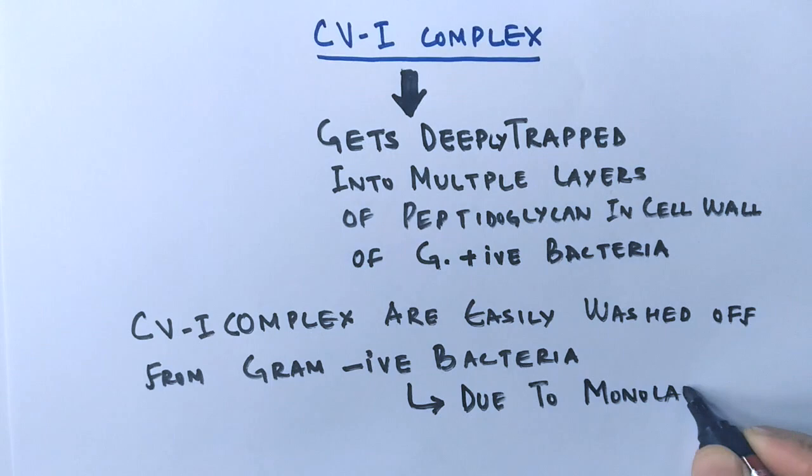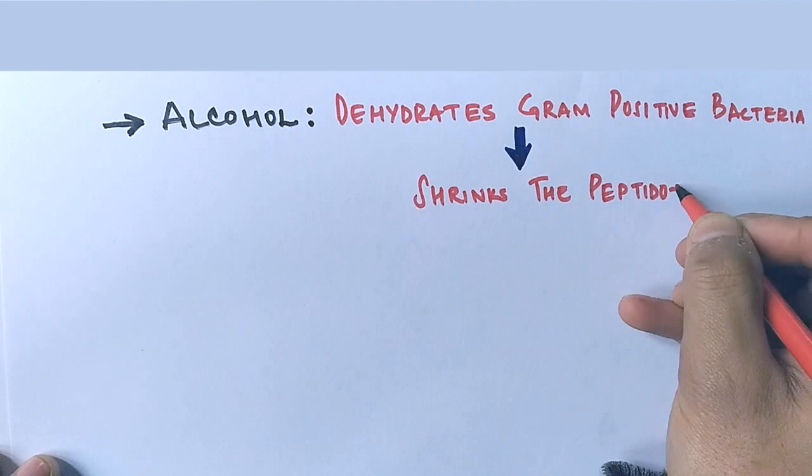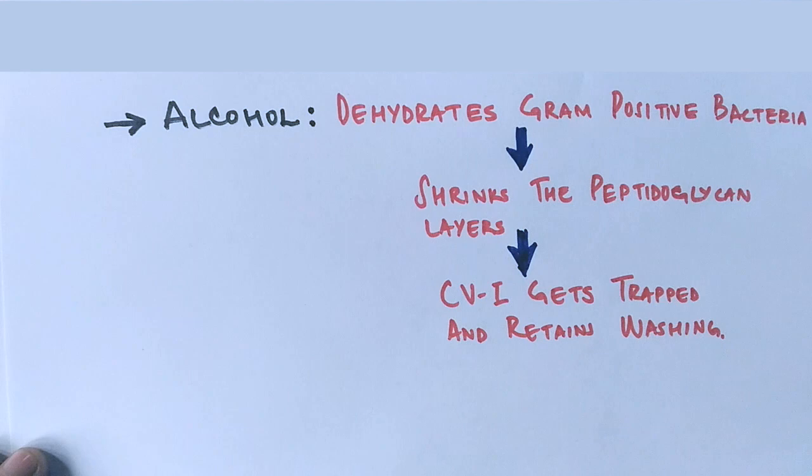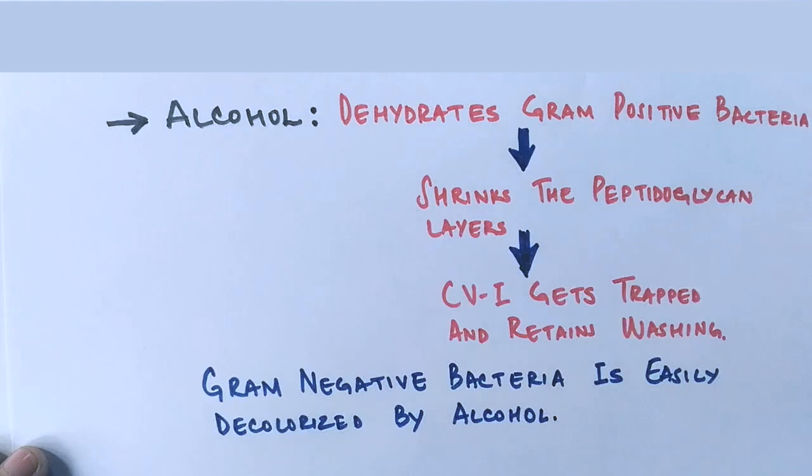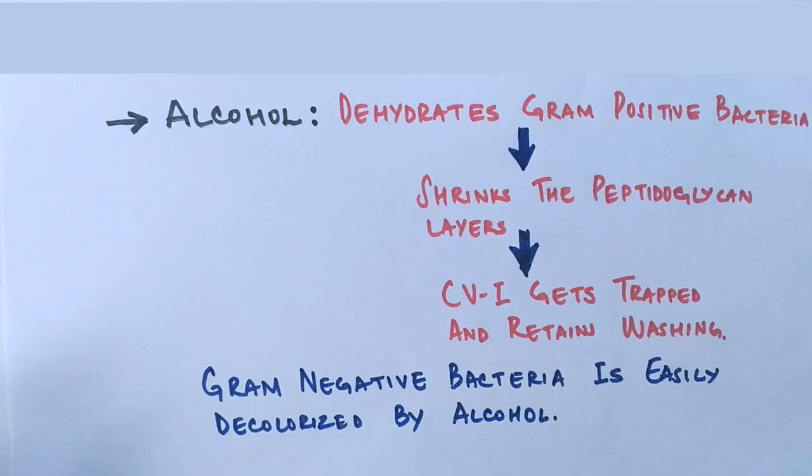The alcohol is used as a decolorizer. Alcohol dehydrates the Gram positive bacteria, which shrinks the peptidoglycan layer, thereby enhancing the retention of the primary dye. Gram negative bacteria are easily decolorized by alcohol since there are no charged species interactions in their cell wall — teichoic acids are absent — and the very thin peptidoglycan layer loses all the primary dye easily on washing. Those cells which lose the primary color are counterstained by the secondary dye saffranin, which is retained by them.